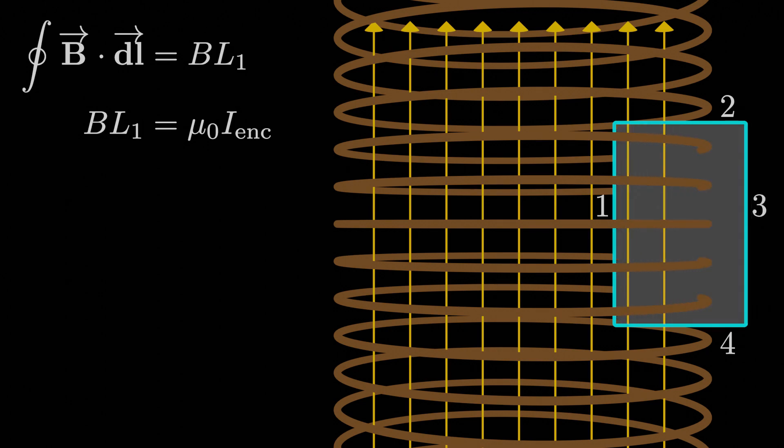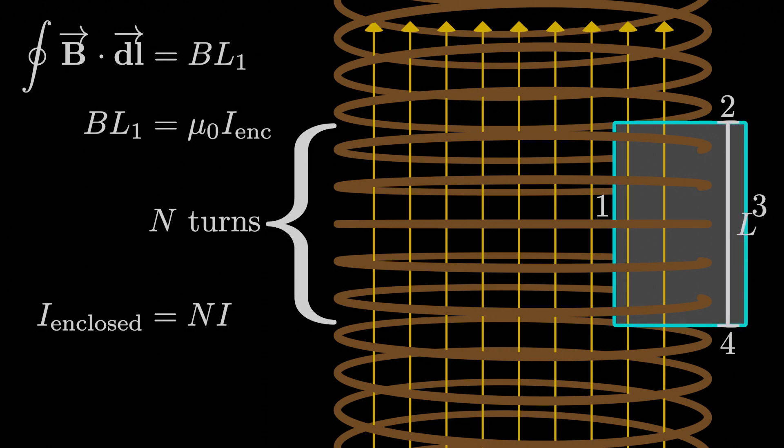Now, what is the current enclosed by our Amperian loop? It's more than just the current of the solenoid I, because that current shoots through the loop once, but then it shoots back around again, and shoots through the loop again, and again, and again. It's a bit easier to see on our real world solenoids shaped like a helix. The same current wraps around and around, passing through our Ampere loop multiple times. If we say that our Ampere loop encloses capital N turns of the solenoid, then I_enclosed is capital N times I, in other words, the number of turns enclosed by our loop times the current going through the whole solenoid.